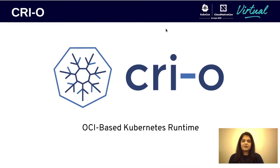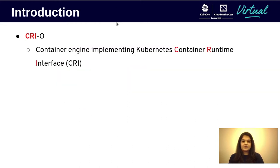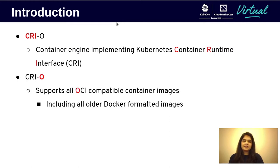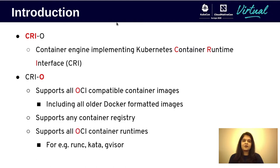So what is CRI-O? CRI-O is a lightweight container engine focused on making Kubernetes container deployments as secure and seamless as possible. CRI-O implements the Kubernetes Container Runtime Interface, hence the CRI in CRI-O. The O stands for Open Container Initiative, which means that CRI-O supports all OCI-compatible images as well as all OCI-compliant runtimes such as Kata, RunC, GVisor, and CERAN.